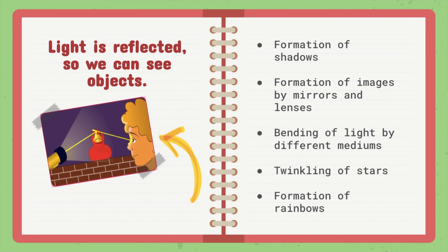Light is reflected so we can see objects. Light waves also help in the formation of shadows, the formation of images by mirrors and lenses, the bending of light by different mediums, the twinkling of stars and the formation of rainbows. That's cool.